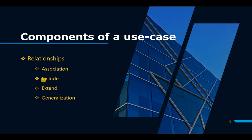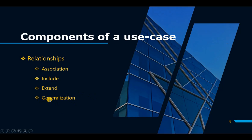If you're confused, stick with me — when I show you the practical example you will understand. The extend relationship is when the base case is executed and the extend case might sometimes be executed or might not be. The last relationship, generalization, is also known as inheritance — there's a parent use case and a child use case, where the child use case is more specific and the parent includes the general content.